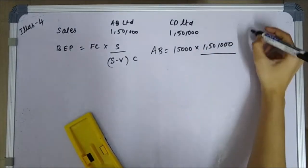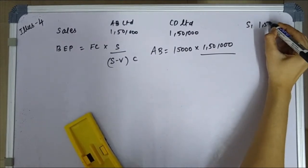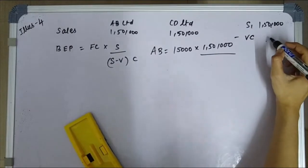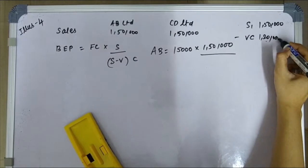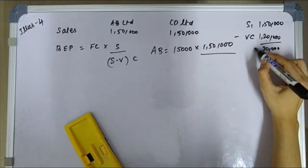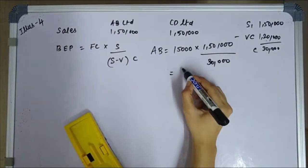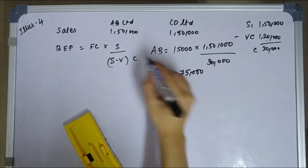Contribution: sales $1,50,000 minus variable cost is $1,20,000, gives you $30,000. This is your contribution $30,000. So $75,000 is your BEP, break-even point for AB limited.